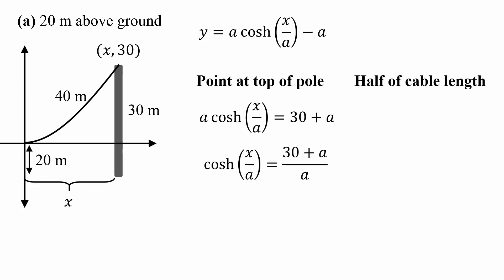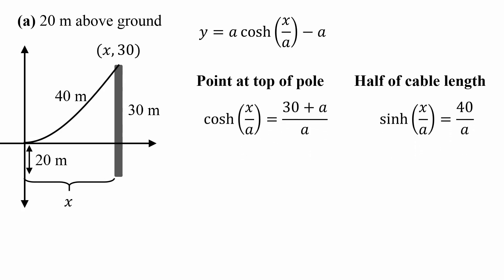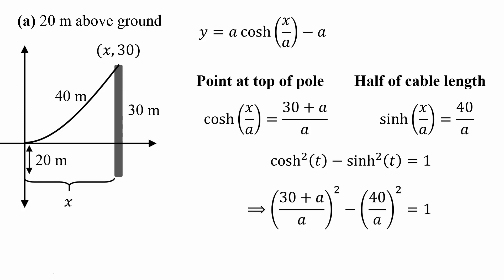We have another equation using the length of half the cable: a·sinh(x/a) = 40, and dividing both sides by a gives: sinh(x/a) = 40/a. We can now use the hyperbolic identity that cosh²(t) − sinh²(t) = 1. Substituting in the values we've derived, we can solve for the parameter a as a quadratic equation.